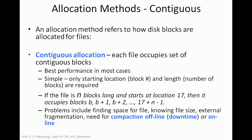An allocation method basically refers to how disk blocks are allocated for files. The disk consists of a number of data blocks, and how those data blocks are allocated to different files is called the allocation method. There are different allocation methods. Let us begin with one of the most important and widely used — contiguous allocation. In contiguous allocation, each file occupies a set of contiguous blocks on disk.